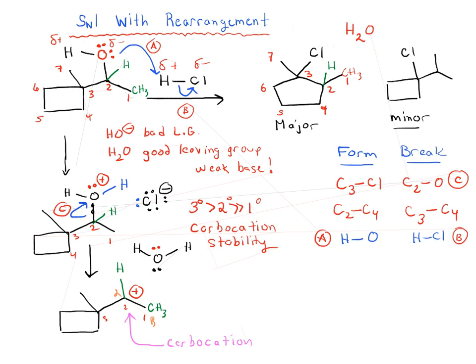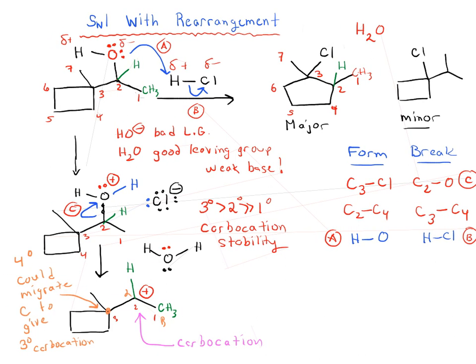If we look at the other neighbor, we have three carbons attached to this carbon, carbon number three. So this could migrate carbon to give a tertiary carbocation. This is a quaternary carbon. So quaternary carbon could migrate a carbon to give a tertiary carbocation. So certainly this would be favored. If we could do this migration, this is going to be favored.